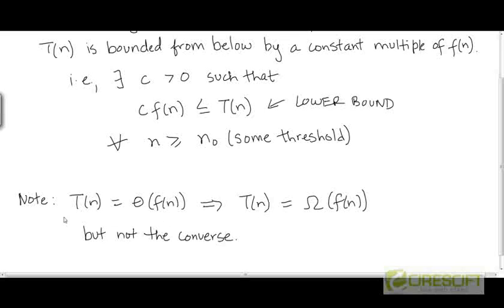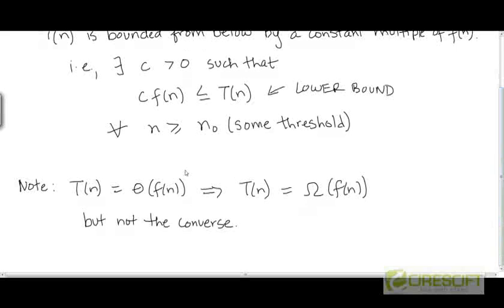If a function t is given to be Theta of f, it must also be Big Omega, because if it satisfies the definition of Theta, there must exist two constants c1 and c2, both positive, such that t is bounded from below by c1 times f and bounded from above by c2 times f. This obviously implies that t is bounded from below by c1 times f by itself. So if we just ignore the constraint for the upper bound, we see that t is Big Omega as well. Whenever t is Theta, it is going to be Big Omega as well.